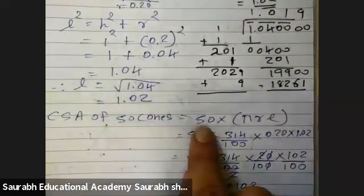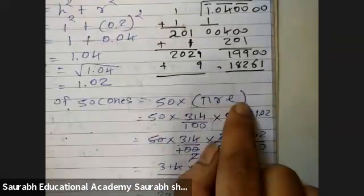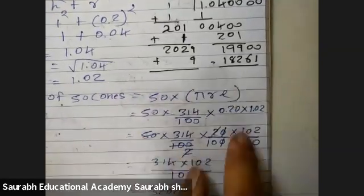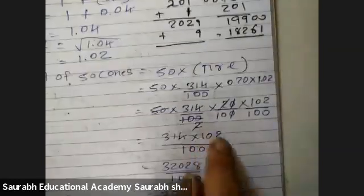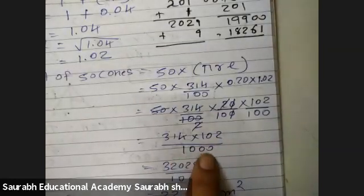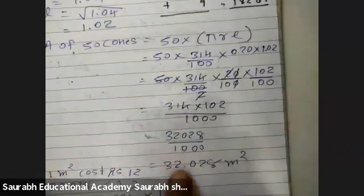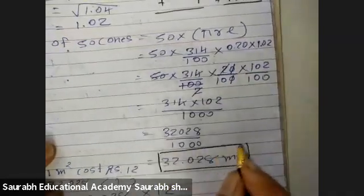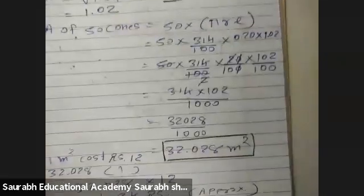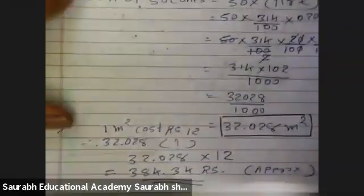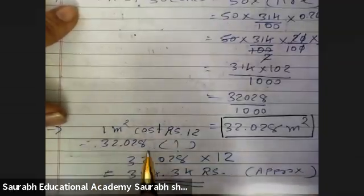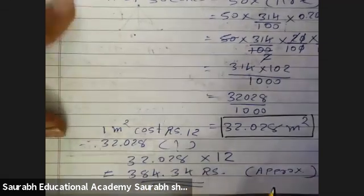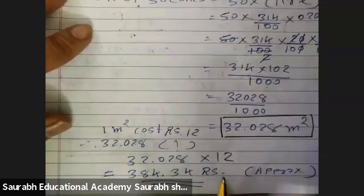Curved surface area of 50 cones equals 50 into π R L: 314 divided by 100 into 0.2 into 1.02, which simplifies to 314 into 102 divided by 1000, giving 32.028 meter square. This is the area of the total 50 cones. Cost: 1 meter square costs 12 rupees, so total cost equals 32.028 into 12, giving approximately 384.34 rupees.